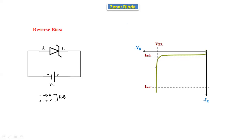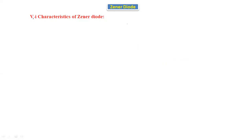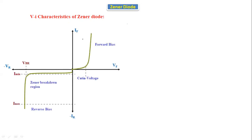This is the advantage of the Zener diode: the voltage remains constant beyond the breakdown voltage. If you apply voltage beyond the reverse breakdown voltage in a normal PN junction diode, the diode will be damaged. But nothing will happen to the Zener diode — that is the advantage of the Zener diode. That's why the Zener diode is used as a voltage regulator.